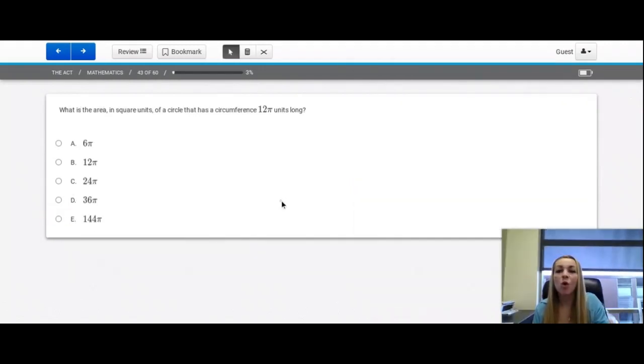Question number 43. What is the area in square units of a circle that has a circumference of 12 pi units long? For this problem, we need to work with two circle formulas. The first one we're going to write down is the circumference. The circumference of the circle is 2 pi r, where r is the radius of the circle. The goal is to find the area. And so we also need that formula. The area of a circle equals pi times the radius squared.